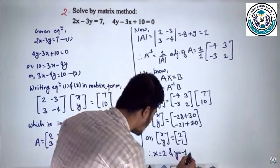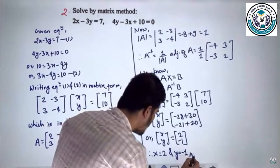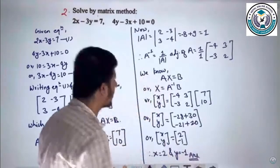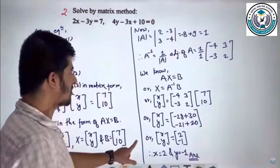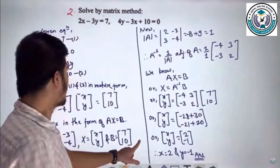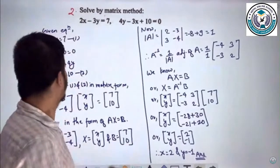y equals minus 1, so x equals minus 1, y equals minus 1 to square root. Let's replace: y equals 2 times minus 1 to square root, and y equals minus 1 to square root.